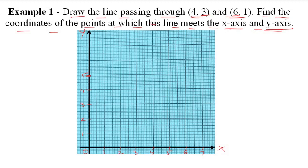Now we plot the points. We need to place (4,3) — going to 4 on x and 3 on y. Then we plot (6,1) — going to 6 on x and 1 on y. Now we have a line passing through both points. We have the two points set, so let's draw the line passing through them.